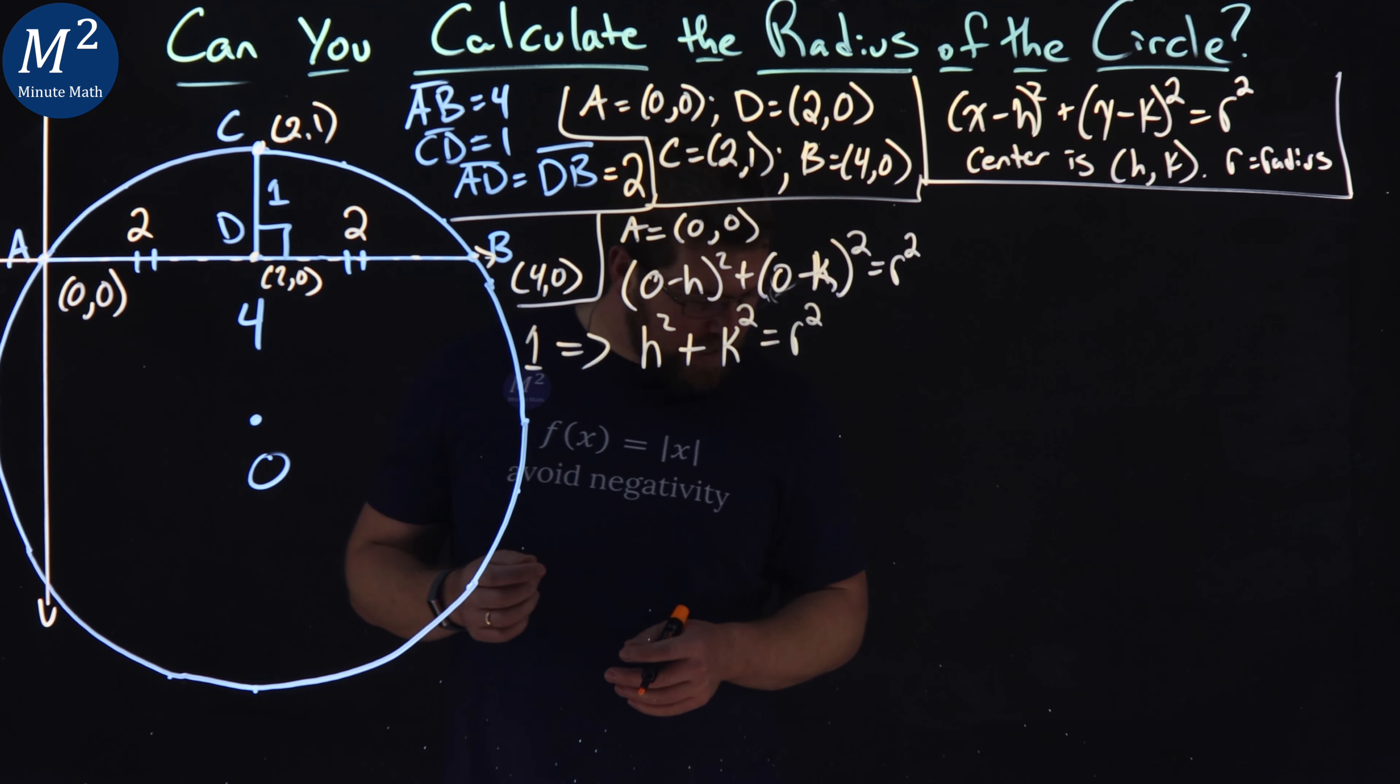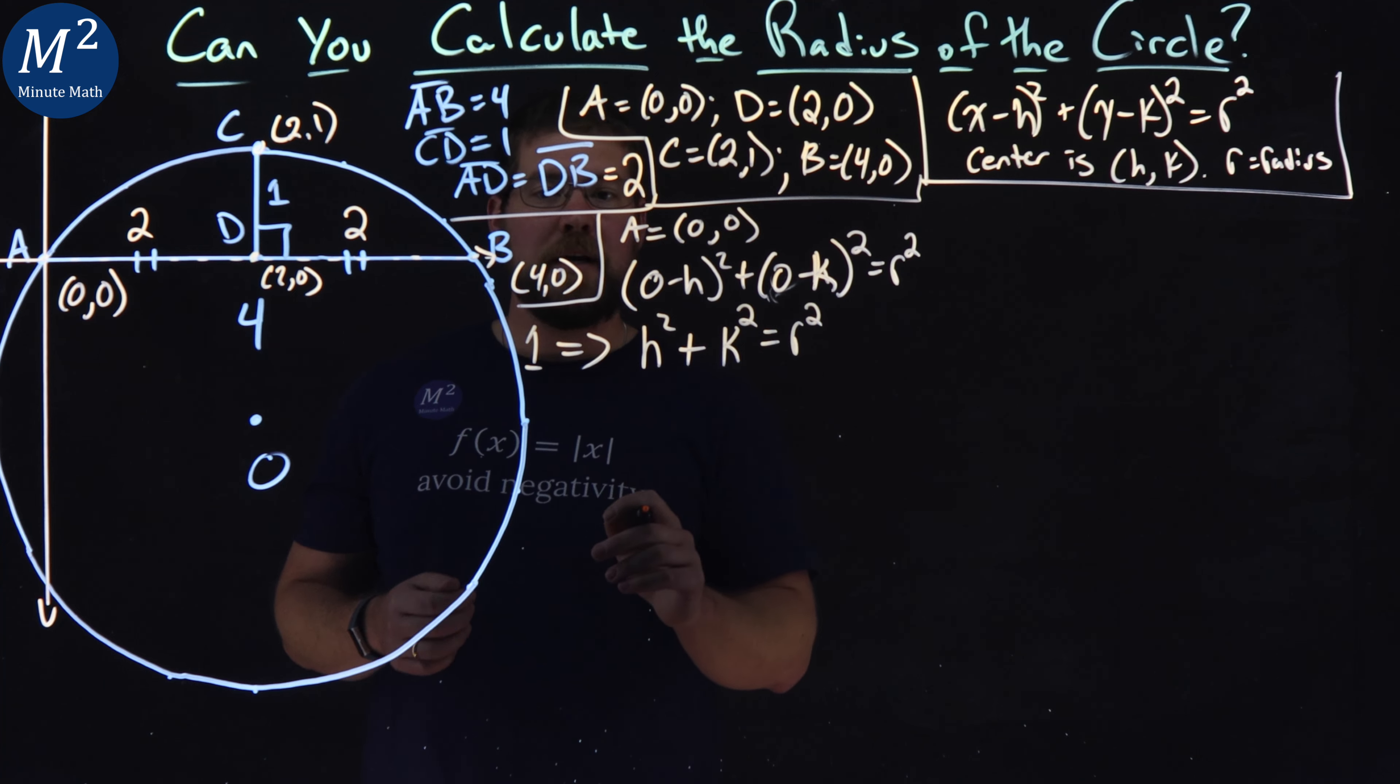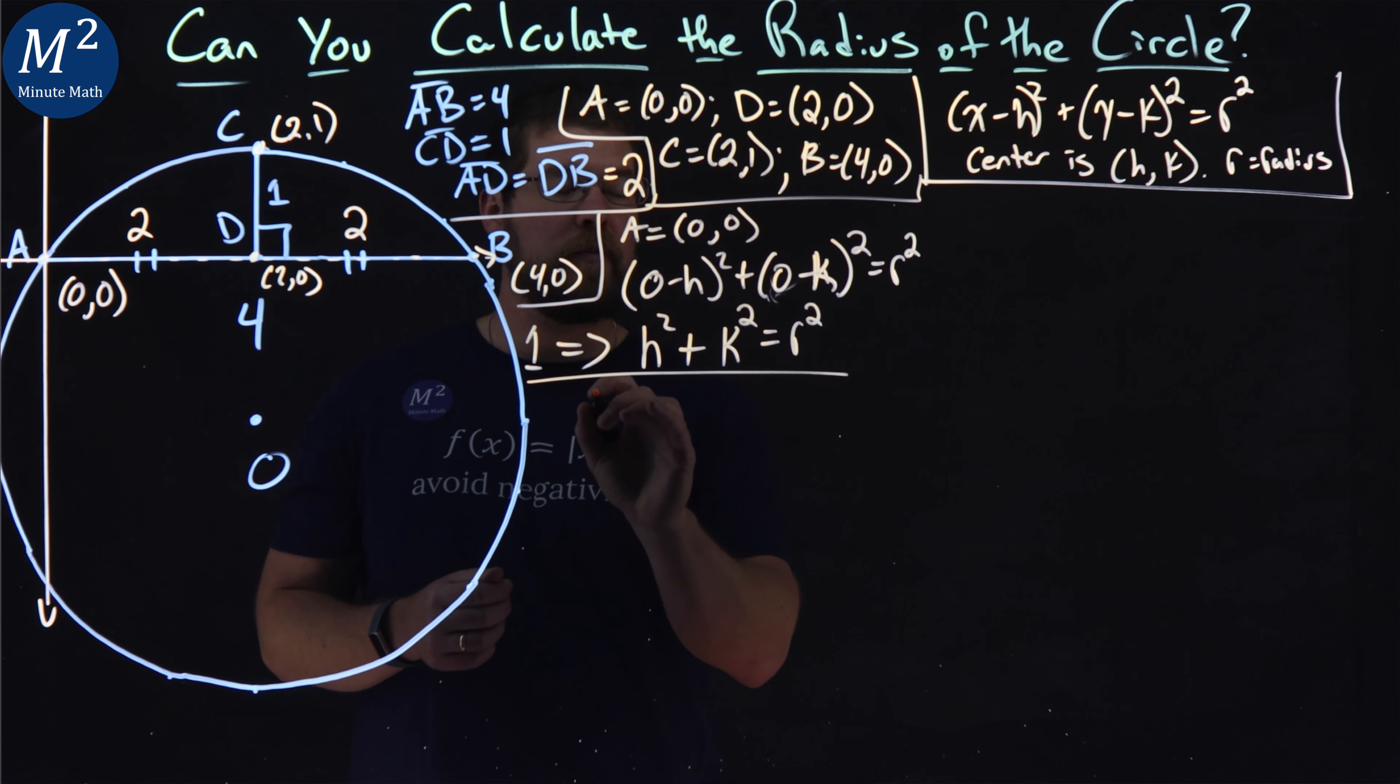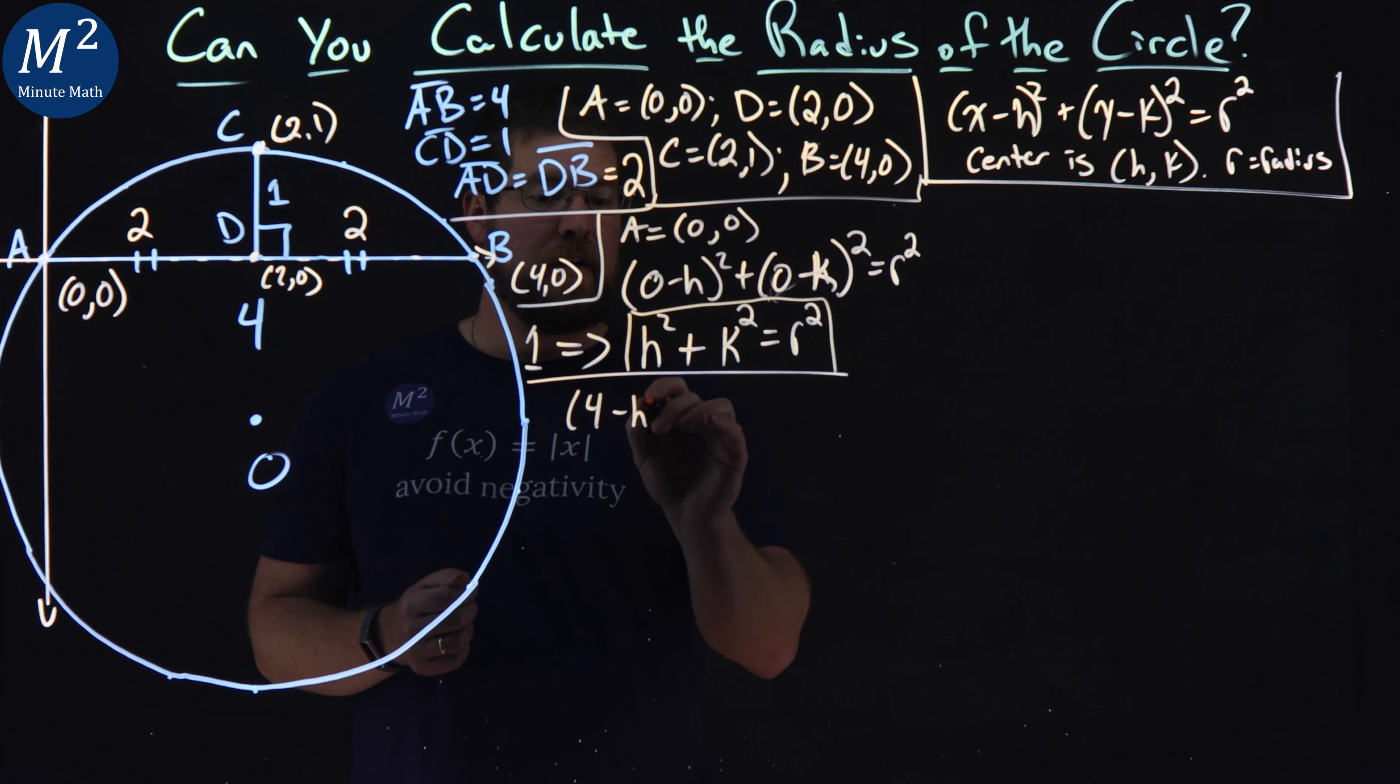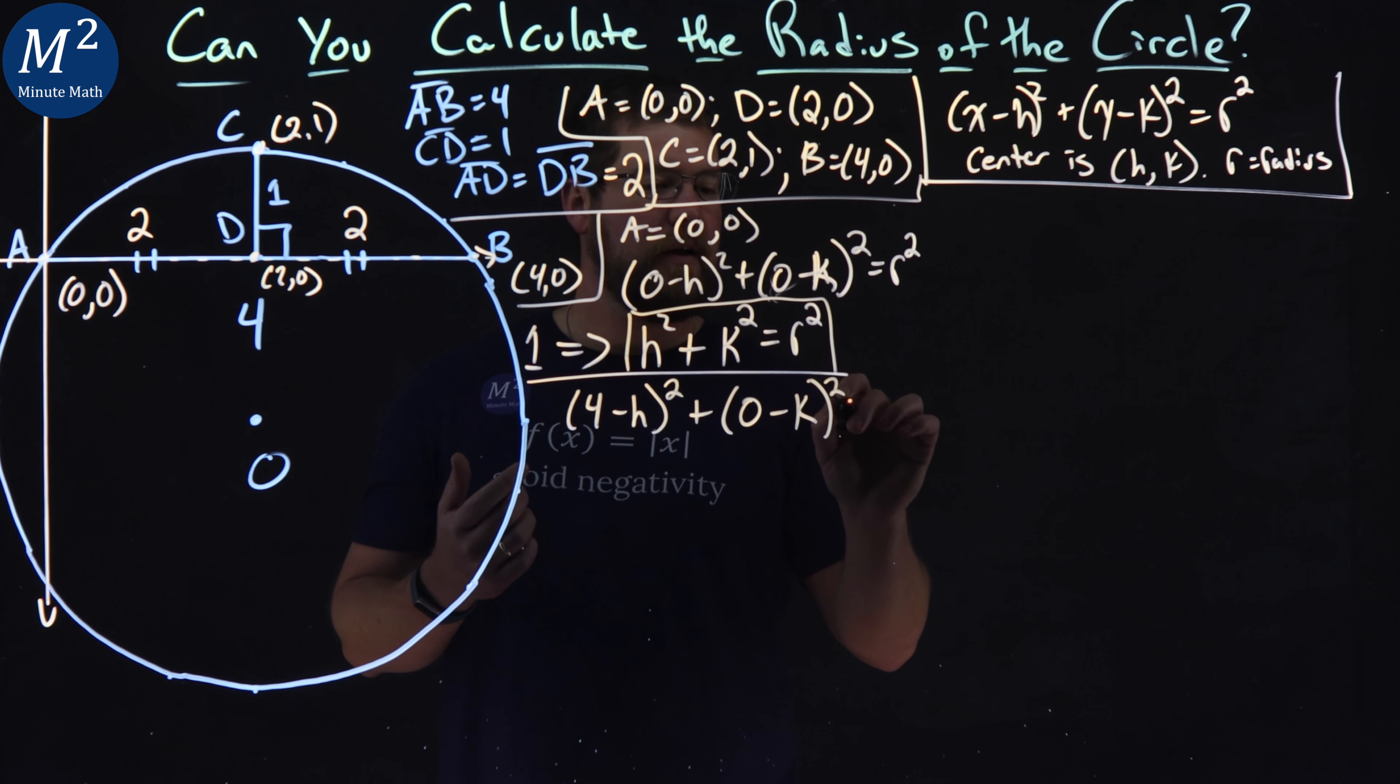The next one I chose to use here is our B value. So the same idea, I'm going to take my B value and plug it into our equation. So B is four comma zero, X comma Y. So we have the equation, X minus H, X is a four. So we have four minus H squared plus Y, which is zero minus K all squared is equal to R squared.